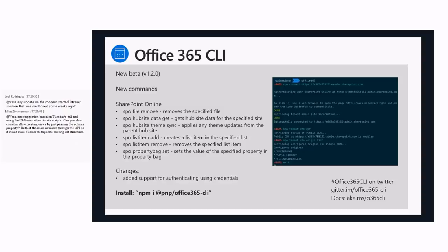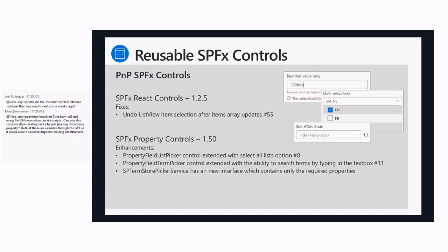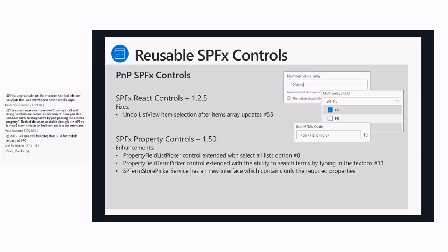We've got a quick update on the reusable components. We just had a release of version 1.25 for the React controls, with fixes for the list view item selection after array updates undoing that selection — that was issue number 55. And the property controls version 1.50 have had several great enhancements around the property field list picker, the term picker, and the term store picker service. Great improvements driven by feedback from the community.